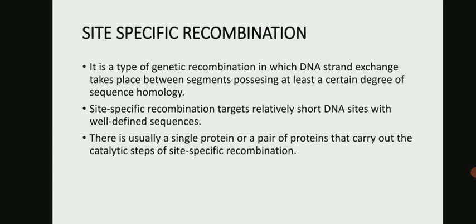It is a type of genetic recombination in which DNA strand exchange takes place between segments possessing at least a certain degree of sequence homology. Unlike homologous recombination, which utilizes a long stretch of homology between partner DNA molecules, site-specific recombination targets relatively short DNA sites with well-defined sequences. There is usually a single protein or a pair of proteins that carry out the catalytic steps, whereas in homologous recombination, a large number of proteins with distinct biochemical activities are required.